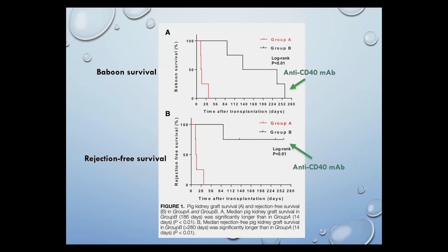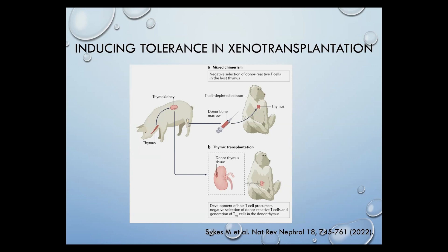This is reassuring because we already have several co-stimulation blockade agents either in clinical use or in clinical trials, meaning we could use what we already have today to optimize graft and patient survival in xenotransplantation. Another concept being introduced into xenotransplantation is tolerance, which is also applied to regular human transplantation. With xenotransplantation, gene modifications could make tolerance even easier to achieve, and this may actually make tolerance more applicable to xenotransplantation than what it has been historically.